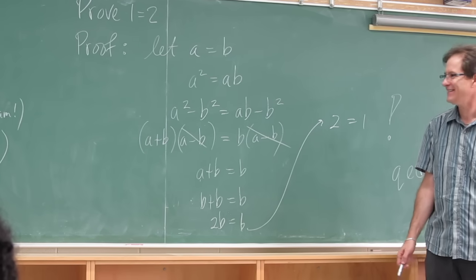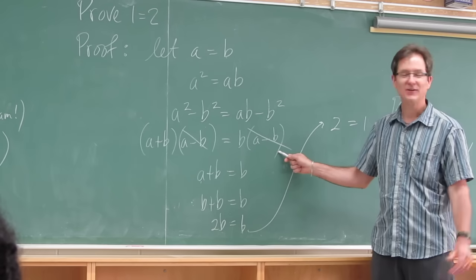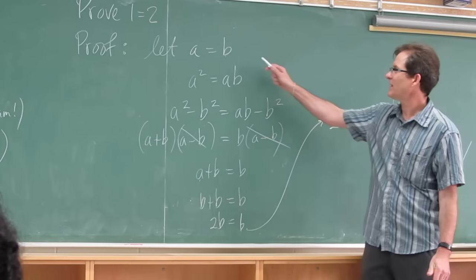Because if you cancel a minus b, you have to make sure a minus b is not zero. But you said a equals b, so a minus b is zero. All right, you're on the right track. So you cannot cancel it.